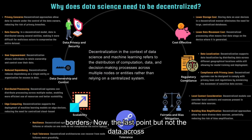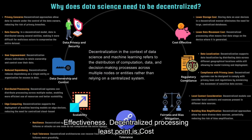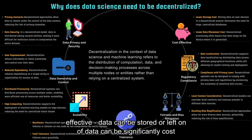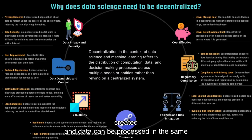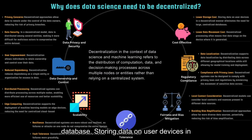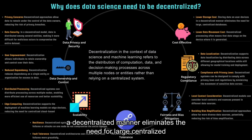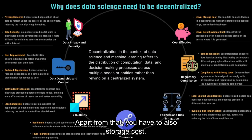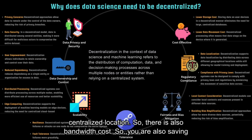The last but not least point is cost effectiveness. Decentralized processing of data can be significantly cost effective. Data can be stored or left on user devices where it is being created, and can be processed on those same devices without uploading to a centralized database. Storing data on user devices in a decentralized manner eliminates the need for large centralized databases — think how much you can save on storage cost. Apart from that, you also save on bandwidth cost since you no longer need to move data from user devices to a centralized location.